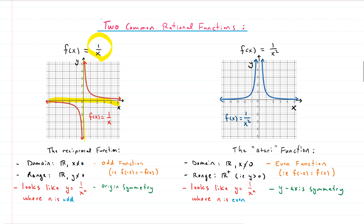The next one I call the Atari function — it's not really called that, I just think it looks like an Atari symbol. Again, it has two bows, but the one that was in the bottom left is now flipped up into the top left, so we have one in the top right and one in the top left. They come from the outside and shoot up as they get close to the Y axis. Again, we have a horizontal and a vertical asymptote.